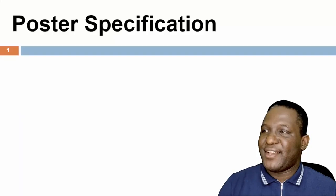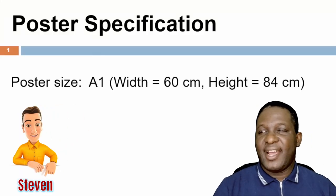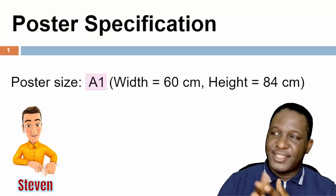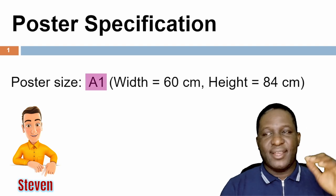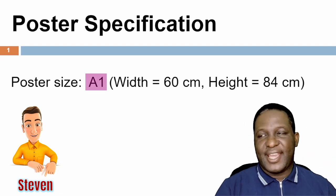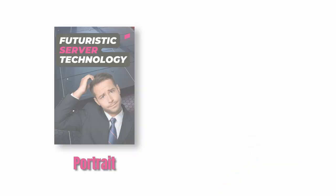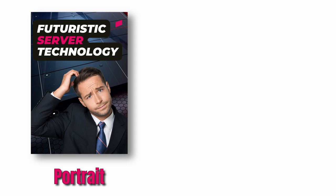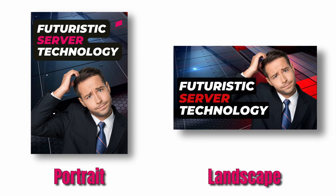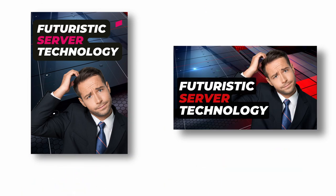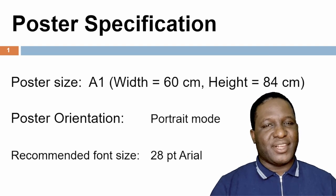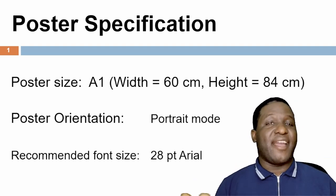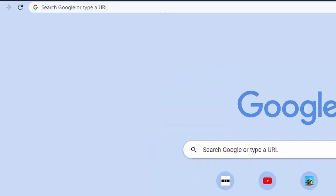These are the specifications Steven is going to use. The poster size has to be an A1 poster, which means the width is 60 cm and the height is 84 cm. The other requirement is that the poster design has to be in portrait mode, not landscape mode. The organizers have also said you must restrict yourself to about 28-point font size.